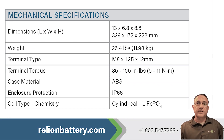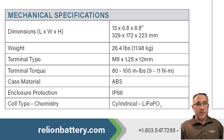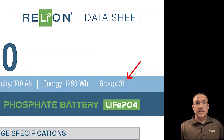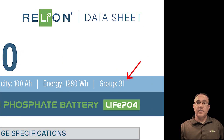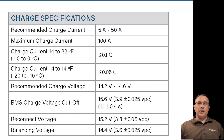Mechanical specifications. The mechanical specifications cover all the physical characteristics of the battery and will help you determine if a model fits your dimensional requirements. In addition, the group size of the battery is listed in the product description at the top of the datasheet. Many RelyOn batteries meet BCI group size guidelines, so they're drop-in replacements for lead-acid batteries.